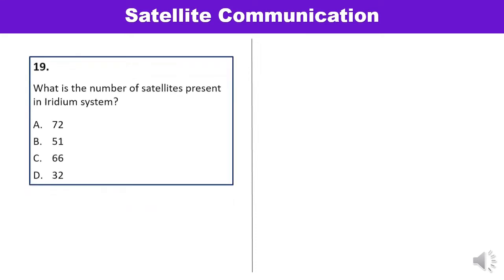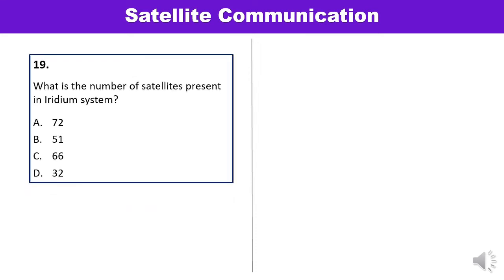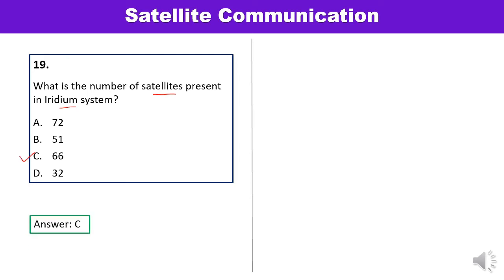Question 19: What is the number of satellites present in the Iridium system? The Iridium system uses a constellation of 66 satellites in 6 polar orbits with 11 satellites per orbit. Answer C — 66 — is correct.